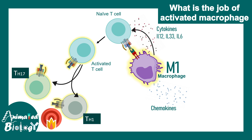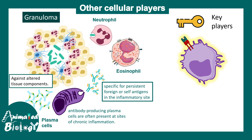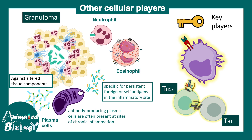M1 macrophages also secrete chemokines, which are chemoattractant molecules that recruit other immune cells — such as macrophages, dendritic cells, and neutrophils — to the site of infection. This creates a vicious inflammatory cycle, completed by the TH1 subpopulation of T cells, which secretes interferon-gamma. Interferon-gamma is a polarizing cytokine that promotes M1 differentiation over M2 differentiation, making M1 macrophages a key driver of chronic inflammation alongside TH1 and TH17 cells.